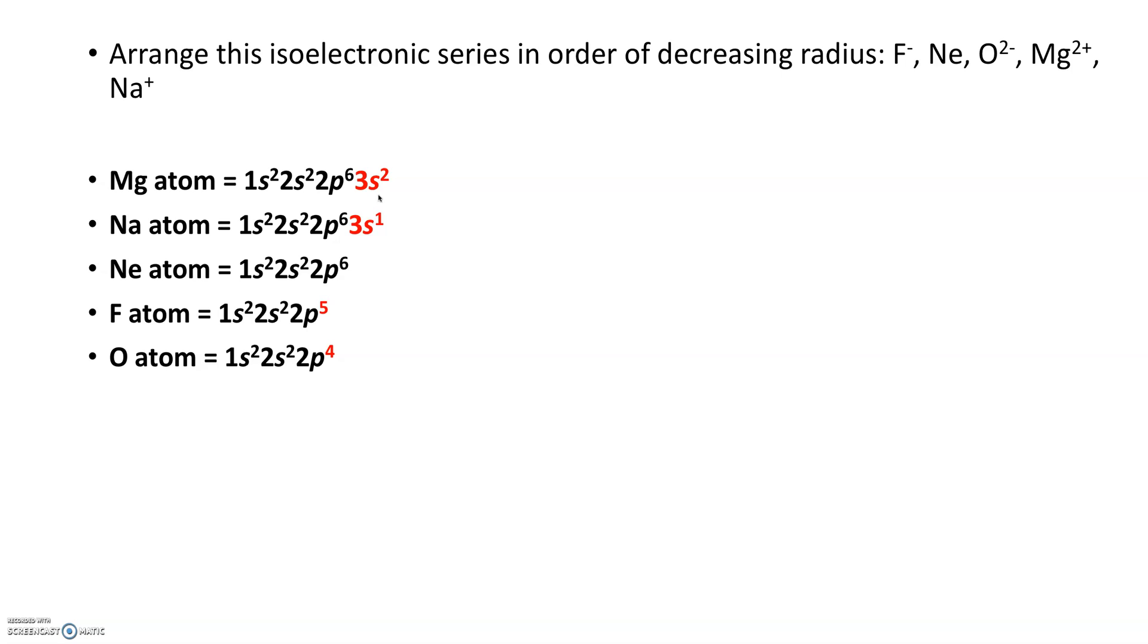But we're not measuring the atoms—that would be a little bit easier. We're actually measuring the ions, and the key here is it's an isoelectronic series. What does that mean? It means they have the same electron configuration.